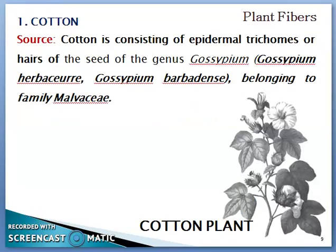The very first plant fiber we are going to study is cotton, also called a cash crop. Cotton consists of epidermal trichomes or seed hairs of the genus Gossypium herbaceum and Gossypium barbadense, belonging to the family Malvaceae. Students should be thorough with these genus names and the family Malvaceae, as cotton is mainly obtained as a seed fiber.